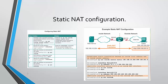For static NAT, we have several steps to follow. First, we have to establish a static translation between private and public addresses — for every inside local address, we need an inside global address. Then the second step is to specify the inside interface, meaning which interface is connected to the inside network, and mark that interface as connected to the inside. Then we do the same with the outside interface and mark it as an outside interface. Here is an example of a topology using static NAT configuration and the commands displayed in order to achieve this.